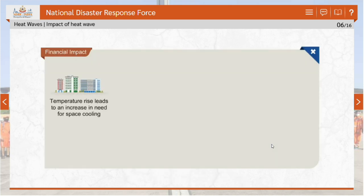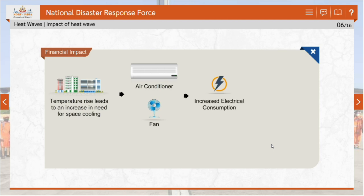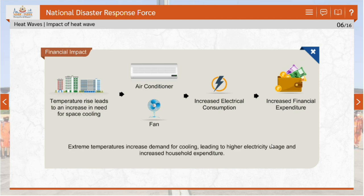Temperature rise leads to an increase in need for space cooling. The power demand in urban areas during summer peaks with cooling load. Due to the use of air conditioners, coolers and fans contributing to maximum consumption of electricity, extreme temperatures exacerbate the demand for mechanical cooling, leading to increased electrical consumption and impacting the average expenditure for a household.